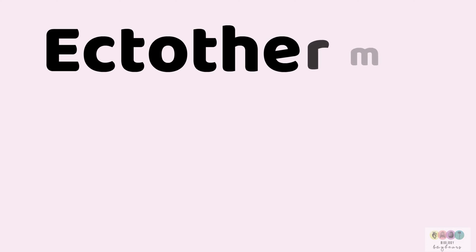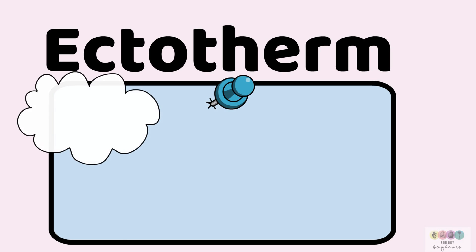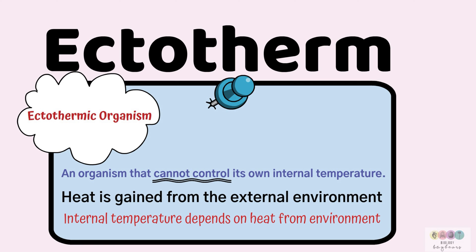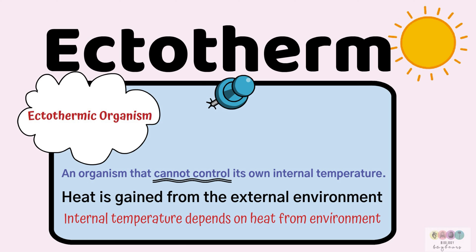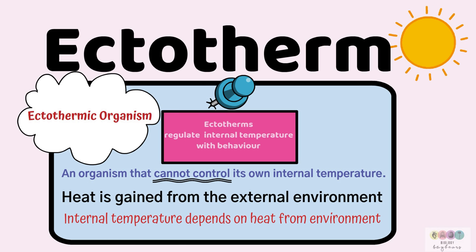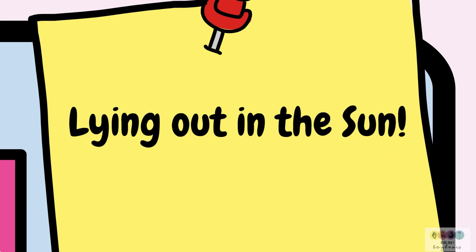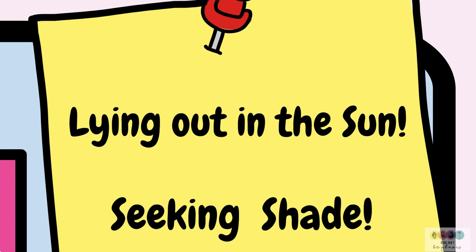What is an ectotherm? An ectotherm is otherwise referred to as an ectothermic organism — an organism that cannot control its own internal temperature. It must take in heat from its external environment, so its temperature pretty much depends on the external environment. They gain heat from basking in the sun, and ectotherms will regulate their internal temperature with behaviour. If they need to gain heat, they'll lie out in the sun, and if they need to cool down, they'll seek shade.